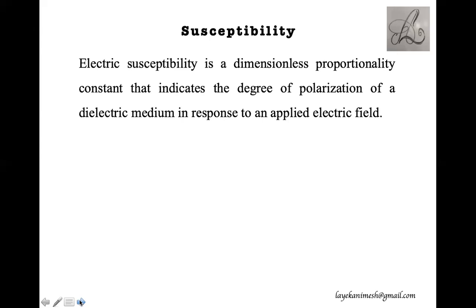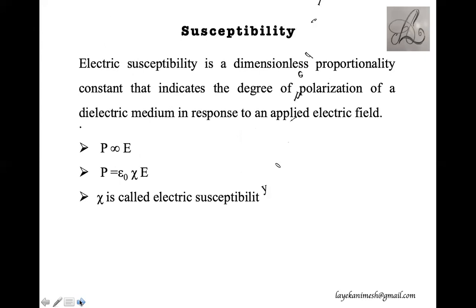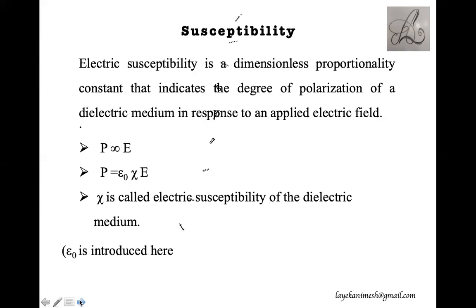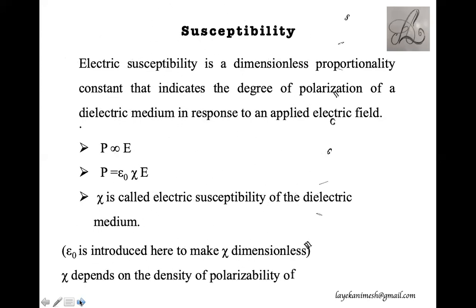We have discussed earlier the polarization vector, denoted as P. This polarization vector is proportional to the applied electric field. When we equate this, we multiply by a proportionality constant: epsilon naught into chi. This chi is the measure of susceptibility of the medium, and so chi is called the electric susceptibility of that dielectric medium. Epsilon naught is introduced to make chi dimensionless. Chi depends on the density of polarizability of the molecules.